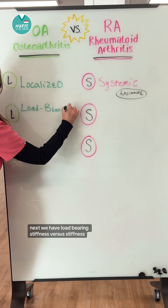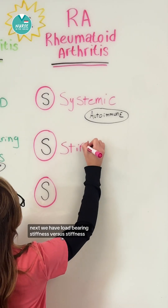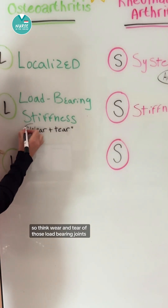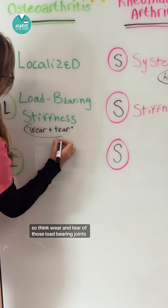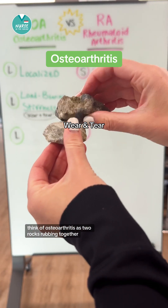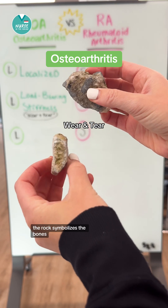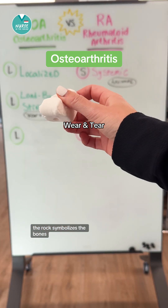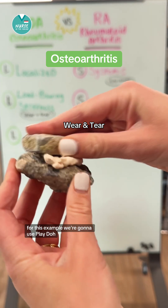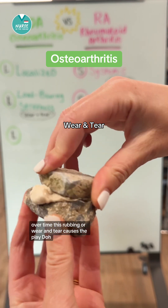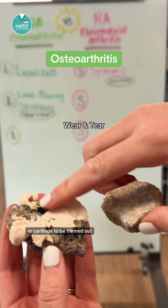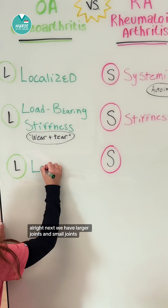Next, we have load-bearing stiffness versus stiffness. Osteoarthritis is gradual erosion — think wear and tear of those load-bearing joints. Think of osteoarthritis as two rocks rubbing together; the rocks symbolize the bones. Then you have the cartilage in the middle — for this example, we're going to use Play-Doh. Over time, this rubbing or wear and tear causes the Play-Doh, or cartilage, to be thinned out.